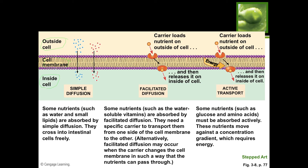Active transport is similar to facilitated diffusion but requires energy because it requires more effort. Examples are glucose and amino acids. The nutrients need to move against the concentration gradient, which requires energy. Think of a room that only 10 people fit in - simple diffusion is small enough to go under the door, facilitated diffusion is the door letting someone in, and active transport is when the room is already saturated with 10 people but you actively open the door and shove one more person in - that requires energy.